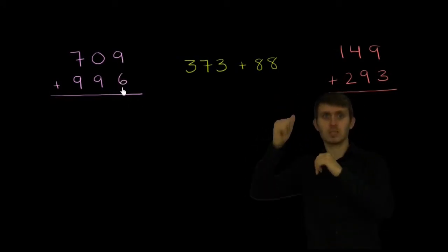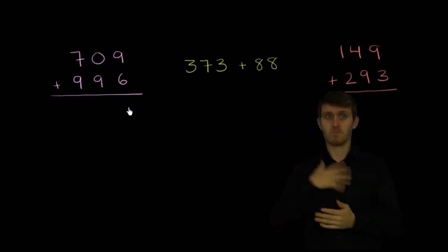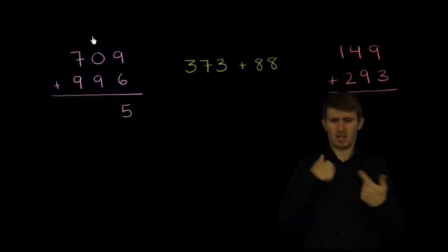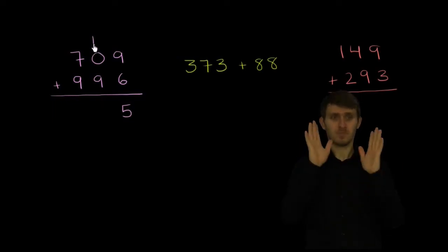So we have 9 plus 6, 9 ones plus 6 ones. Well, 9 plus 6 is 15. We could write the 5 in the ones place and then we can carry the 1. But what did we just do? What does this 1 represent?